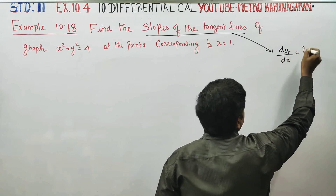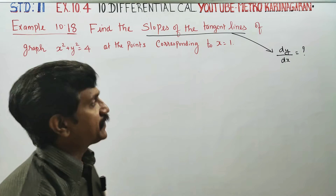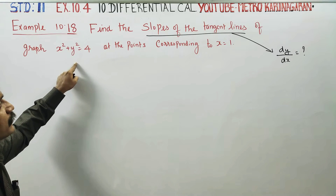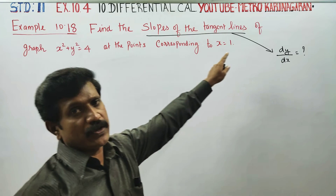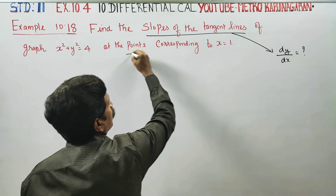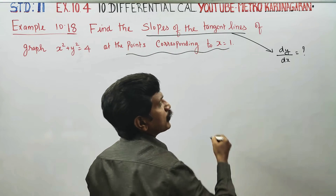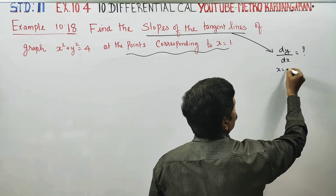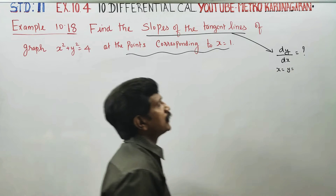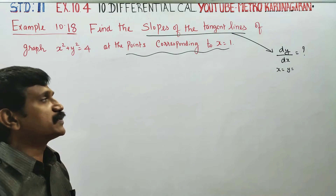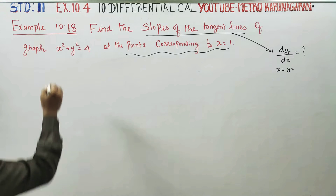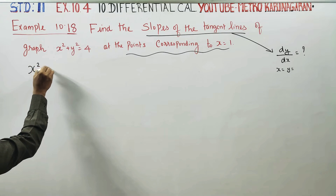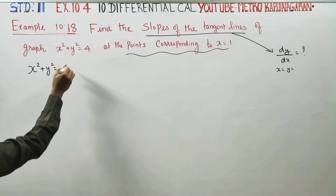Find dy by dx of the graph at the points corresponding to x is equal to 1. We need to find dy by dx — we will give values for x and y — and find the slope at that particular point. First, I will take my equation: x squared plus y squared is equal to 4.